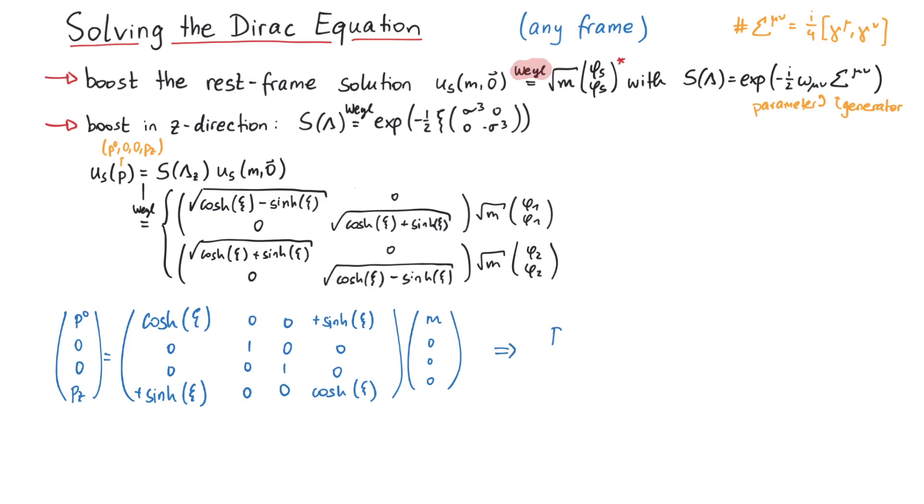This means p0 is given by m times the hyperbolic cosine of psi, and pz is given by m times the hyperbolic sine of psi. Now, we can replace the hyperbolic sine and cosine functions with p0 and pz.